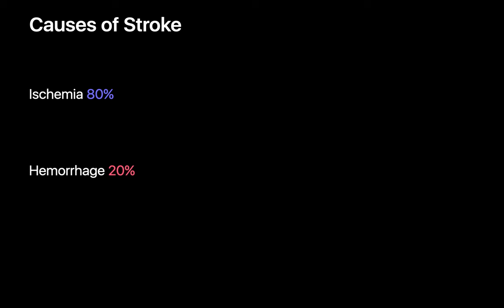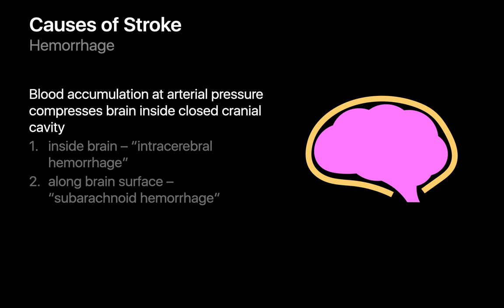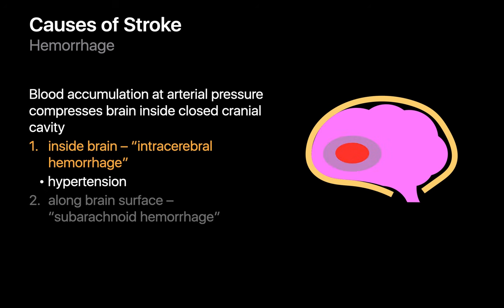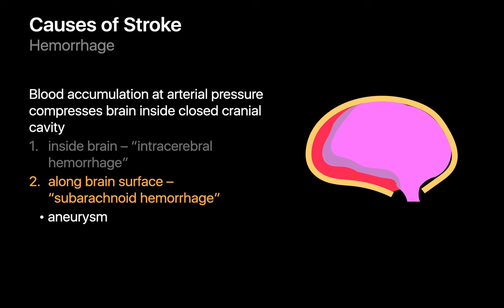The other 20% of strokes are hemorrhagic in cause. In hemorrhagic strokes, blood leaking from an intracranial artery accumulates inside the closed cranial cavity, occupying space that would have been occupied by brain. The mass effect of this blood under arterial pressure on the adjacent brain tissue may lead to irreversible brain tissue damage. The origin of this blood may either be intracerebral, most often as a consequence of long-standing hypertension, or subarachnoid, as a consequence of a ruptured aneurysm.